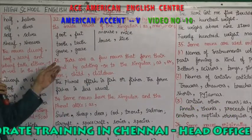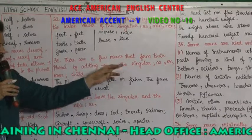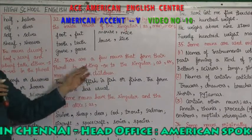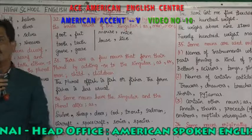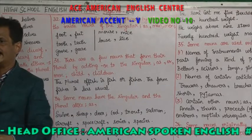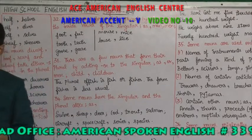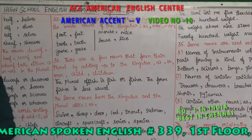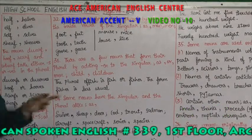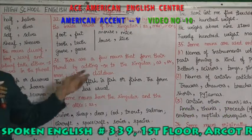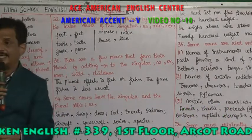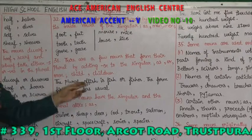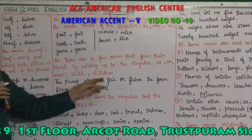There are a few nouns that form their plural by adding EN to the singular: ox becomes oxen, child becomes children. By adding EN it becomes plural.